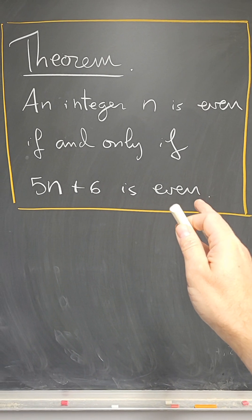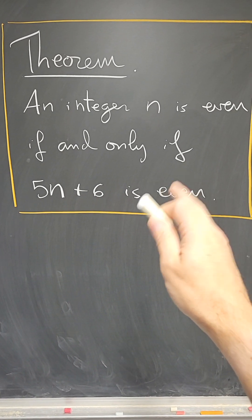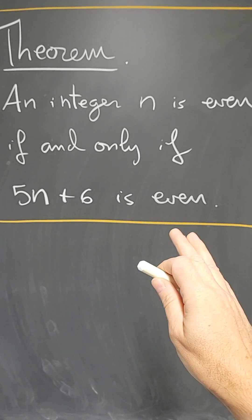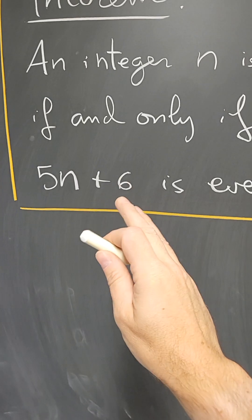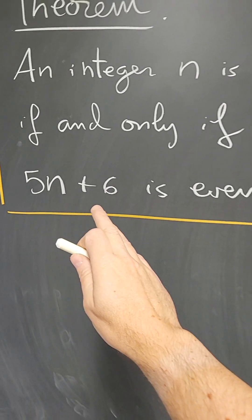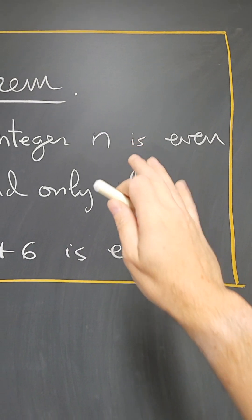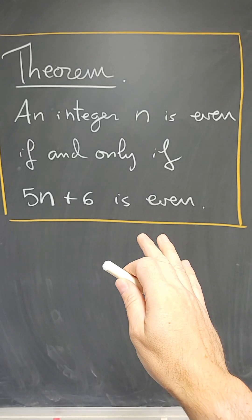This is an if and only if statement, and that means there are two statements in one here. This means that if n is even, 5n plus 6 is even. And also that if 5n plus 6 is even, then n is even. And we have to prove both statements.